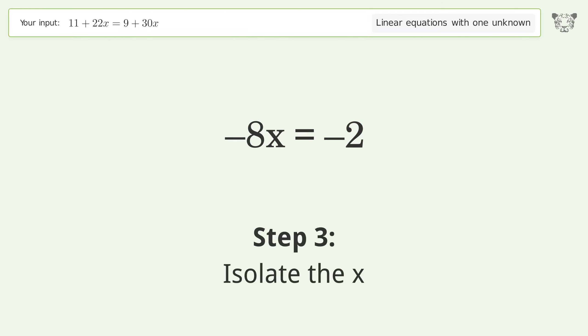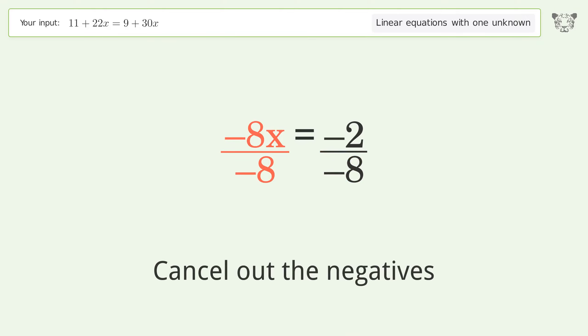Isolate the x. Divide both sides by negative 8. Cancel out the negatives. Simplify the fraction. Cancel out the negatives.